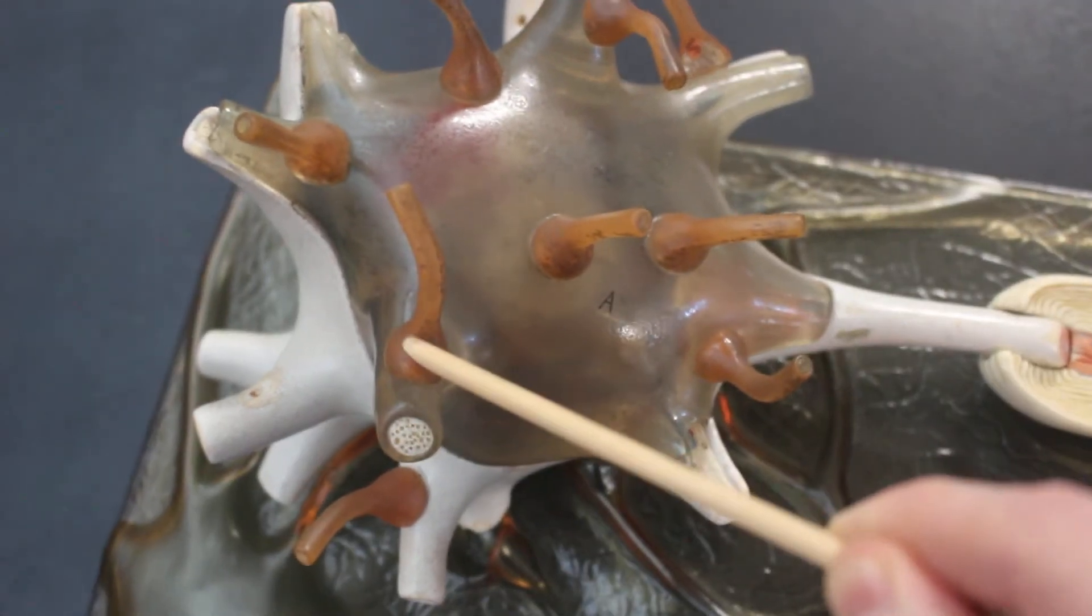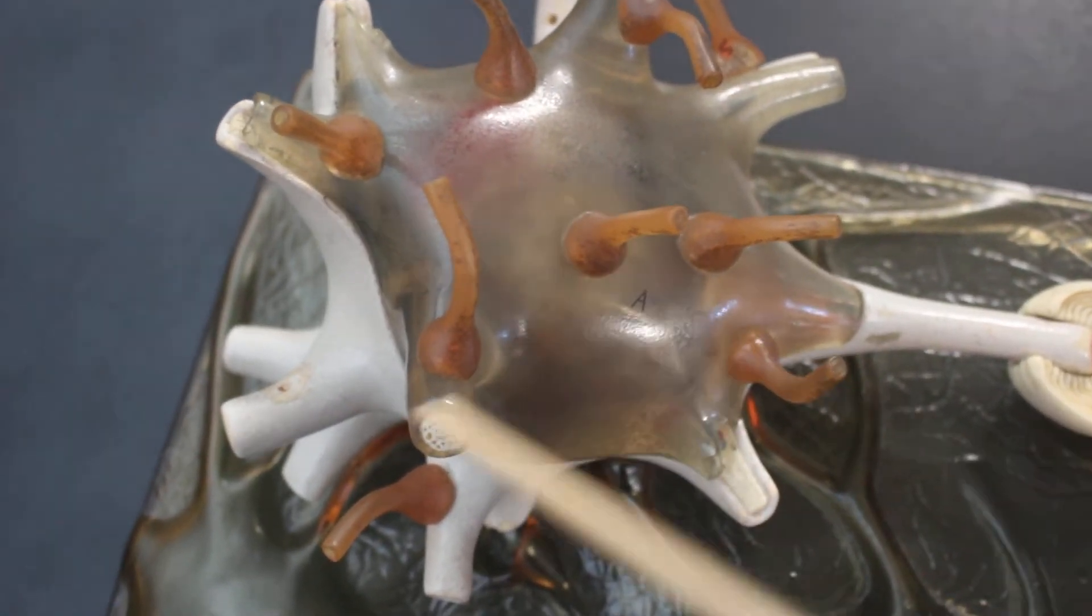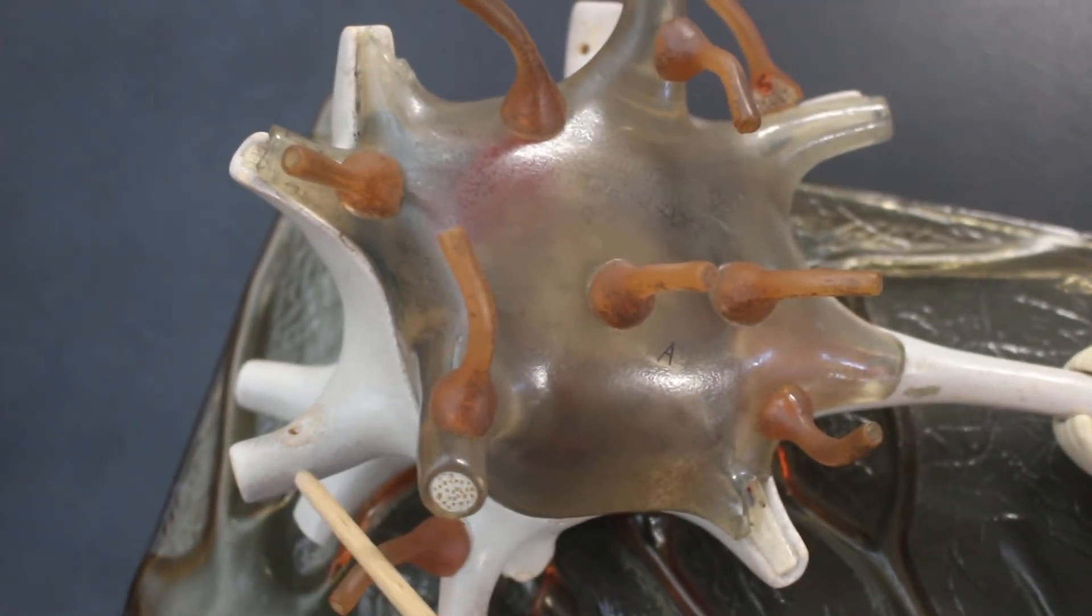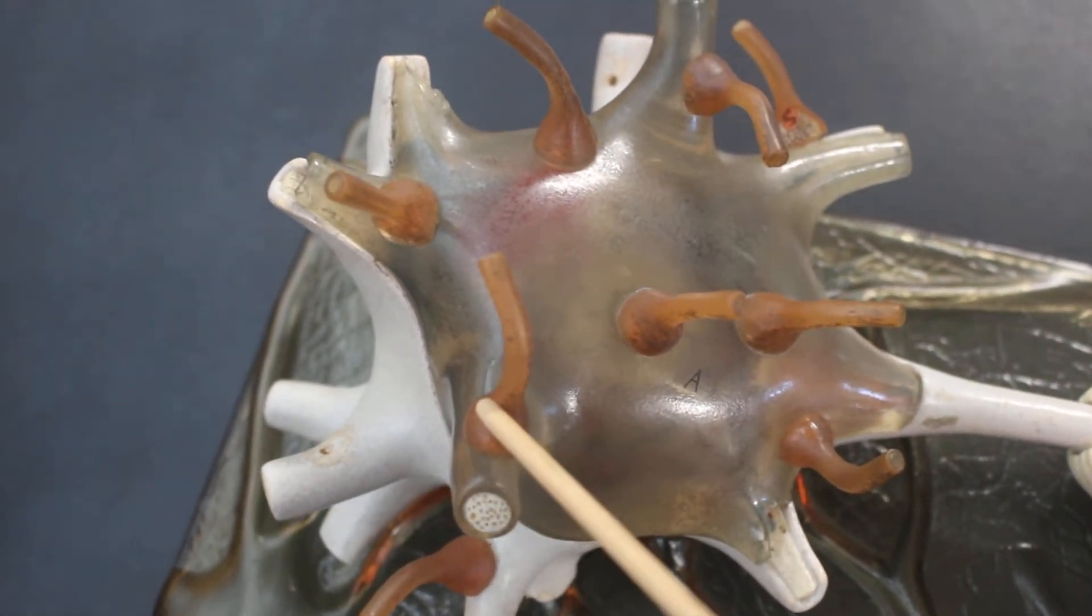These are the synaptic end bulbs. The little stubs sticking out, these little stubs are the dendrites. When they come together we have, of course, a synapse.